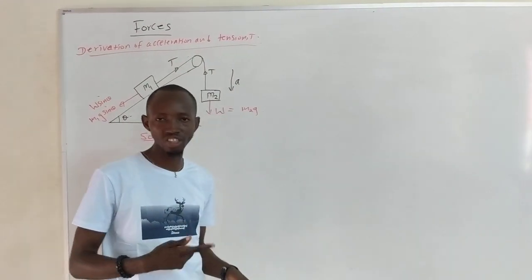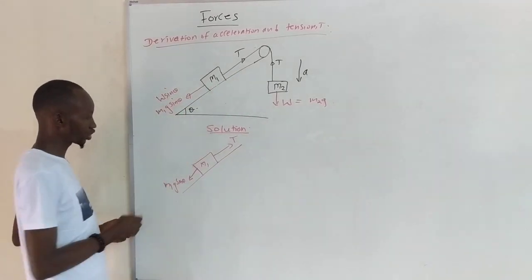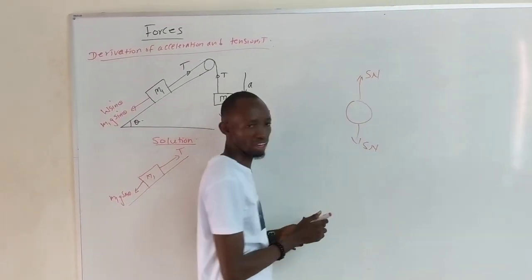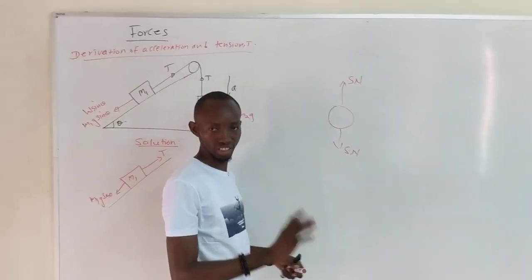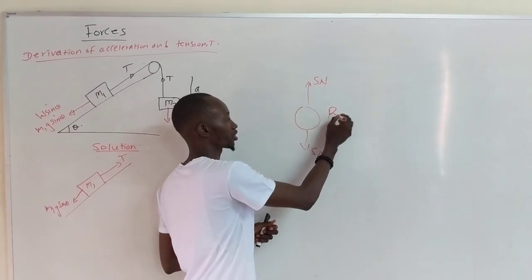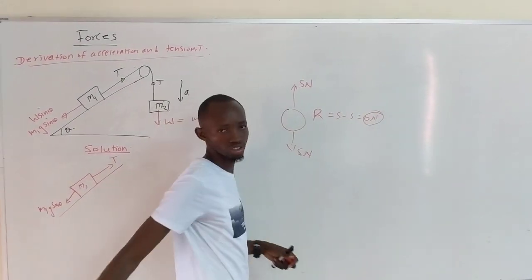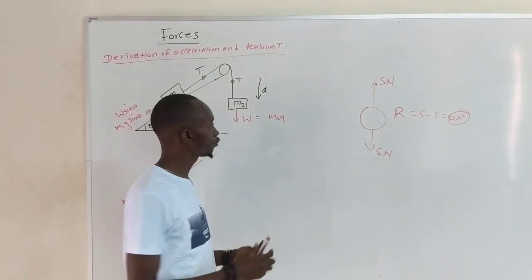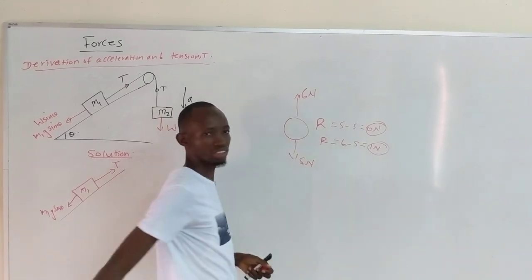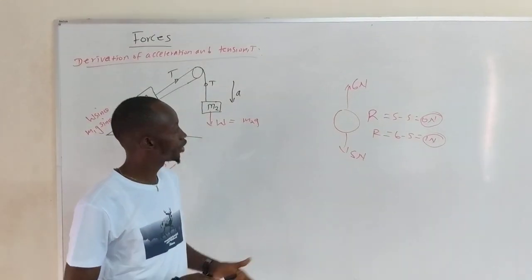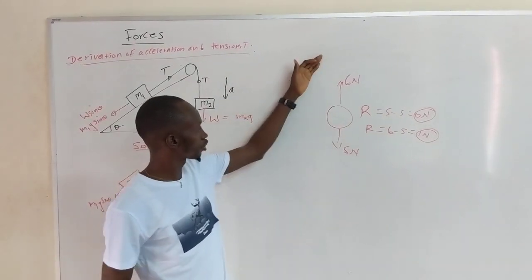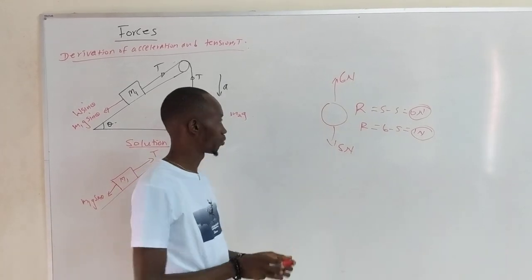Weightlessness is caused by the absence of support and normal reaction. Now, if we consider forces — say we have forces of 5 newtons acting upward and 5 newtons downward — this object is in equilibrium because the forces are equal in magnitude. The net force is 5 minus 5 equals zero, meaning the object is in equilibrium. However, if one force is 6 newtons, the resultant is 6 minus 5 equals 1 newton, so the object is not in equilibrium. An object is in equilibrium when the upward forces equal the downward forces. We must take note of that.